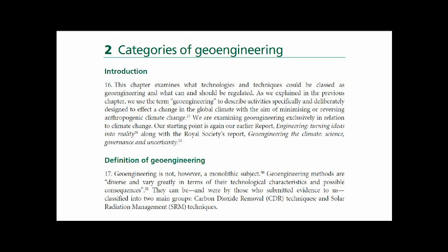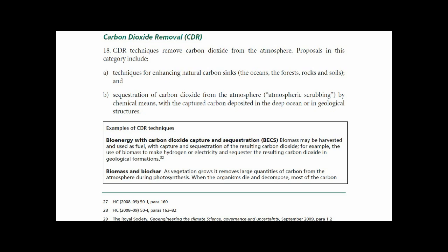Geoengineering is not a monolithic subject. Geoengineering methods are diverse and very differentiated in terms of their technological characteristics and possible consequences. They can be classified into two main groups: carbon dioxide removal, the CDR techniques, and solar radiation management, the SRM techniques. Let's talk first about carbon dioxide removal, the CDR techniques.